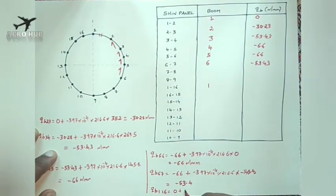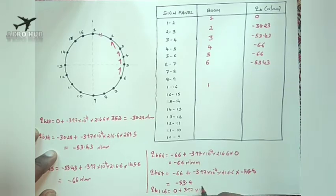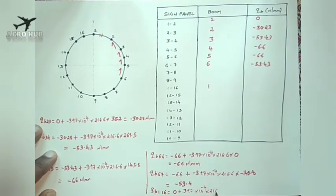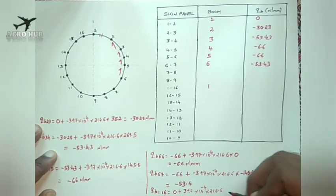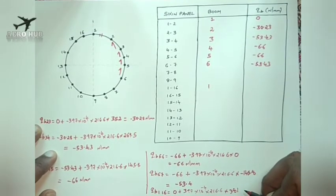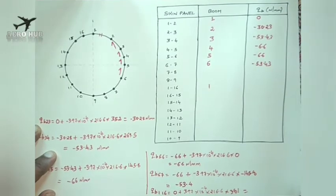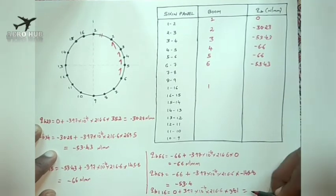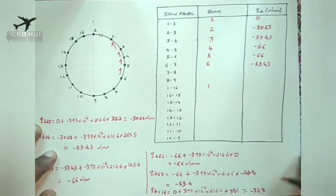For QB1,16, we are passing boom number 1 with a previous shear flow of 0. So QB1,16 equals minus 3.97 into 10 power minus 4 into 216.6 into 381, giving an answer of minus 32.8 N/mm.